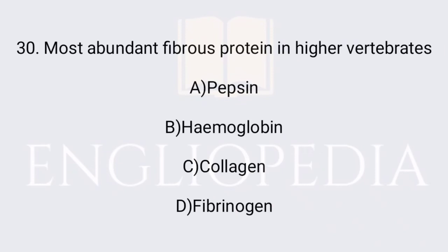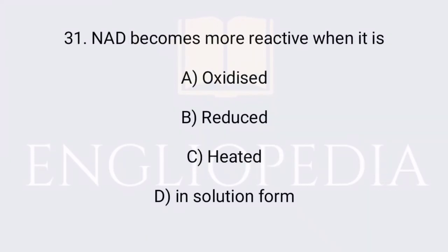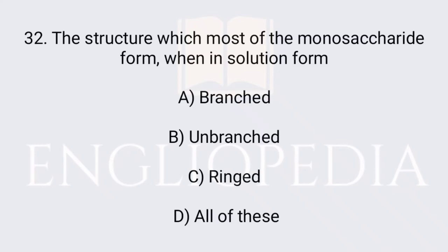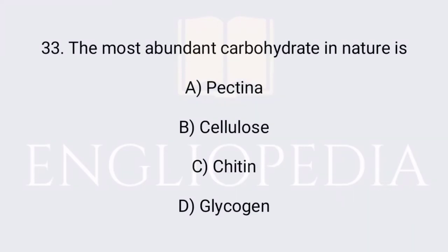The most abundant fibrous protein in higher vertebrates is collagen. NAD becomes more reactive when it is reduced. The structure which most monosaccharides form when in solution is a ring structure. The most abundant carbohydrate in nature is cellulose.